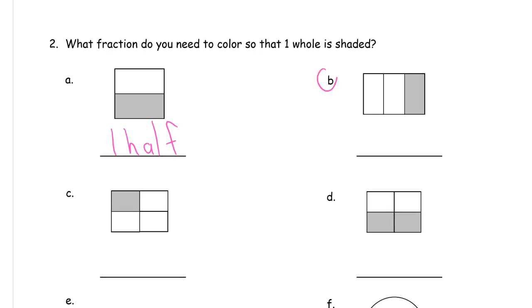Now, this rectangle for B is in thirds. One of them is shaded in, but I still need to shade in two of them, so it's two thirds.